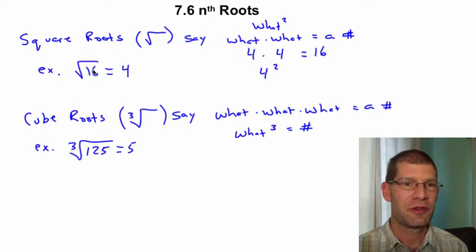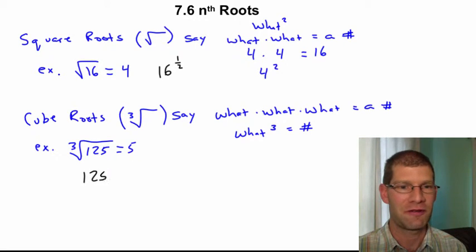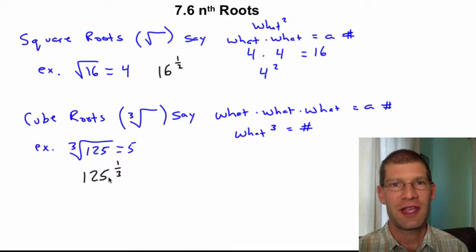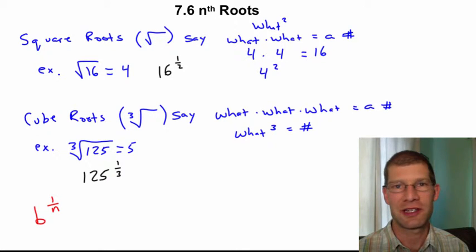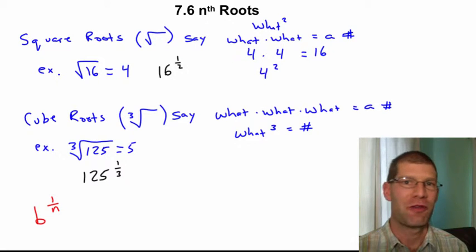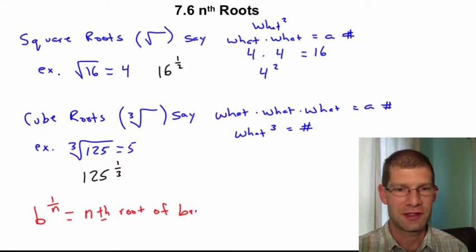One thing that's new in this section is when you have the square root of 16 that we can write that with a radical, but we could also say that's the same as 16 to the 1 half power. Or when we have the cube root of 125, we could say that's the same as 125 to the 1 third. That's going to be one of the new things we want to write then, is in this section, we have b to the 1 over n. The reason we're picking n is because it's going to be a natural number that we're not going to be doing like 1 over 0.5 or 1 over negative 3 or something like that. But you could say b to the 1 over n, that's going to be the nth root of base b.